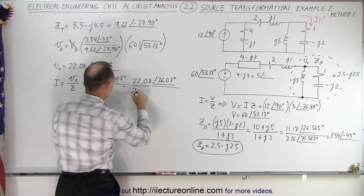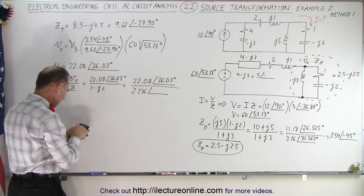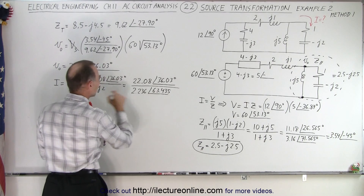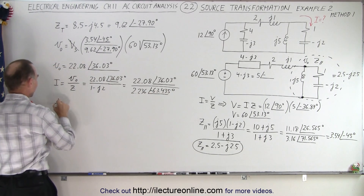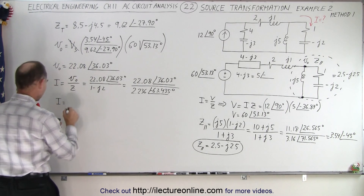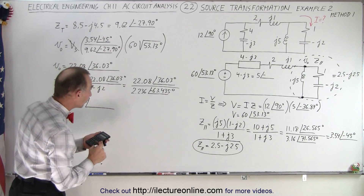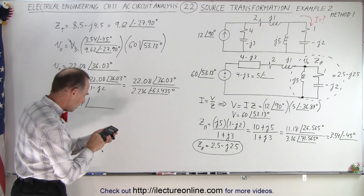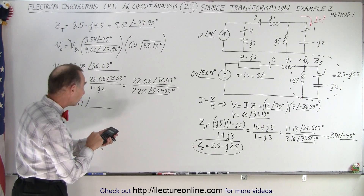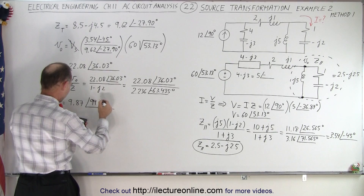So I equals the output voltage divided by the impedance of the final branch, which is 1 minus J2. The magnitude of 1 minus J2 is the square root of 1 plus 4, which is 2.236, with a phase angle of minus 63.435 degrees. The current is therefore 22.08 divided by 2.236, which gives us 9.87, with a phase angle of 36.03 plus 63.435, which equals 99.46 degrees.